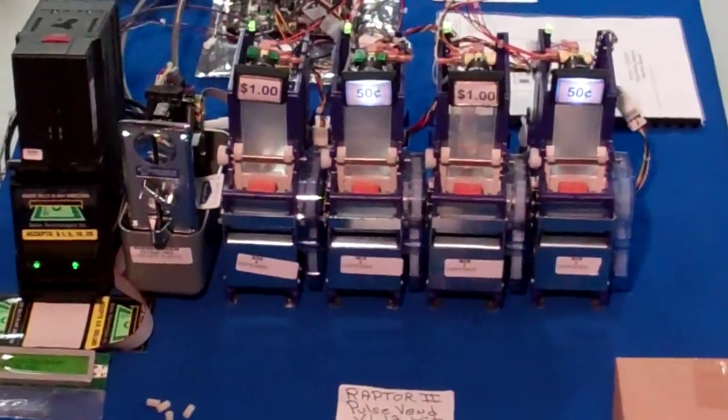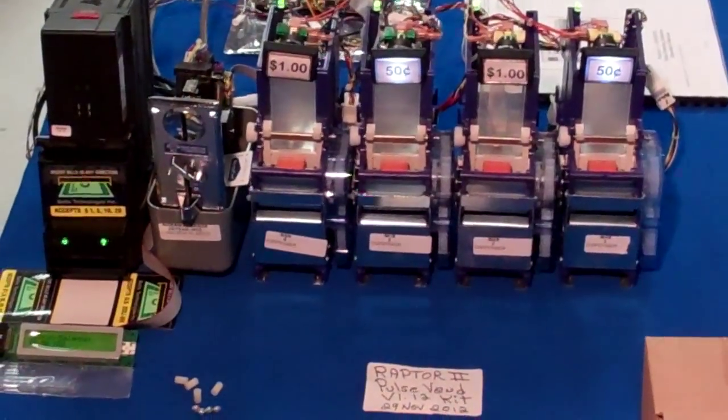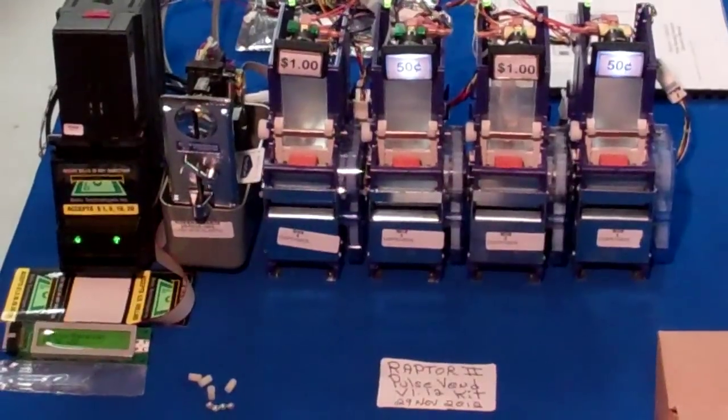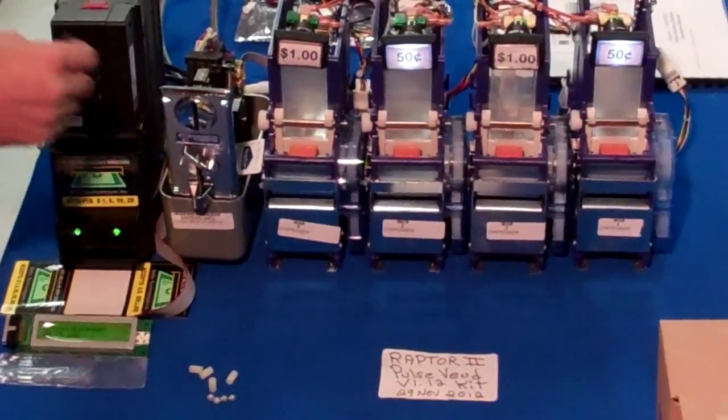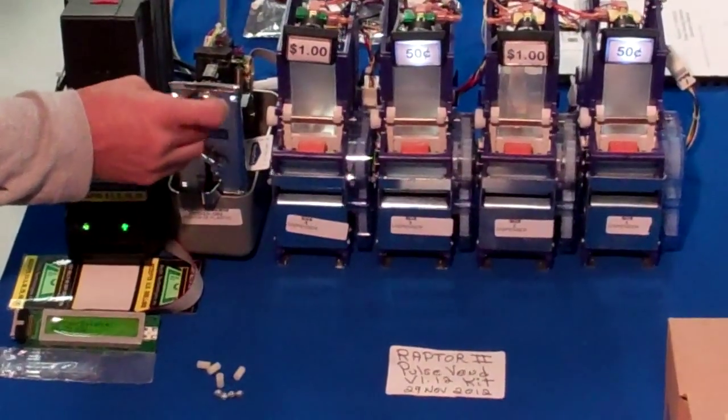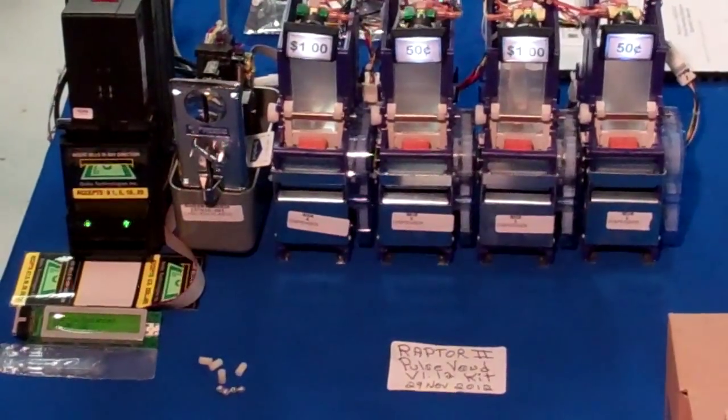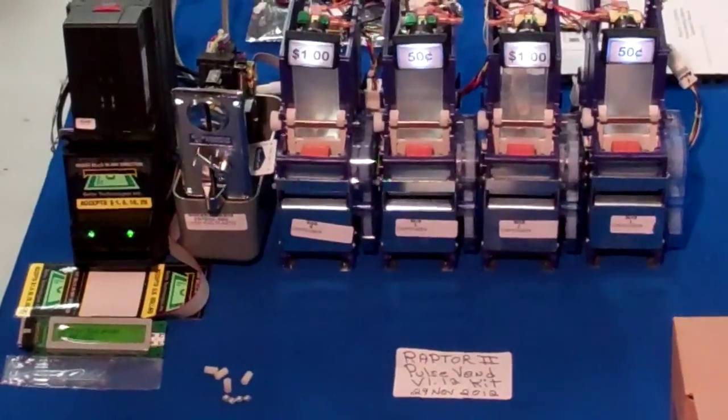We're going to start by dropping coins in. We've got a vend price set at $0.50, so we'll put in two quarters first. This coin mechanism is electronic. You'll note $0.50 has been added to the display.